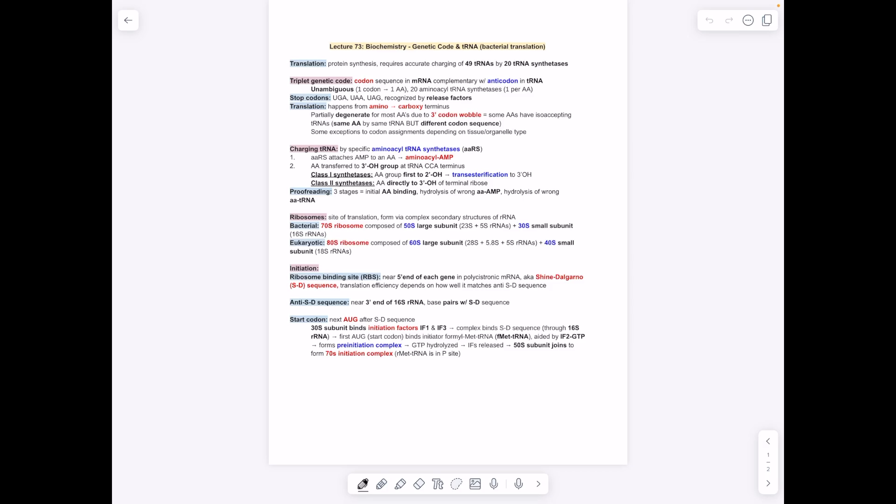We have translation. I think important to know here is that the codons are unambiguous, meaning one codon per one amino acid, but they are degenerate, which means that there's redundancy—you can have four tRNAs can code for the same amino acid. Then we have aminoacyl tRNA synthetase, which goes through and charges the tRNA. Ribosomes—for eukaryotes, it's the 80S ribosome complex, which is made up with the 60S large unit and the 40S small unit. For bacteria, it's 70S, 50S, and 30S.